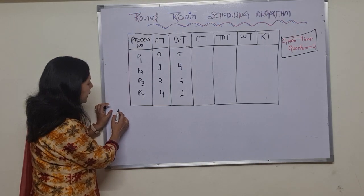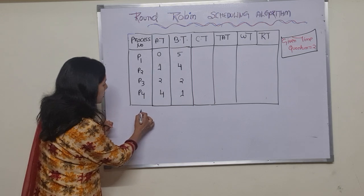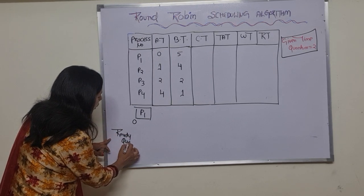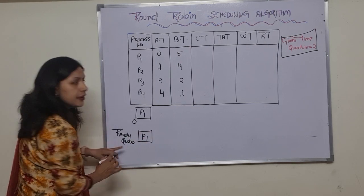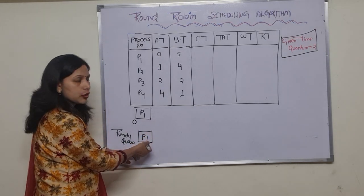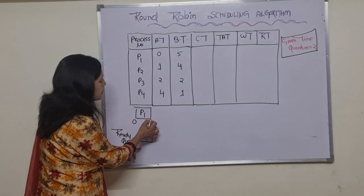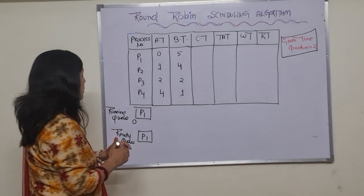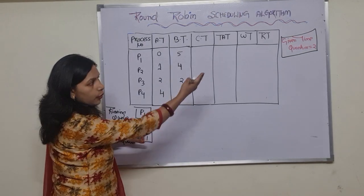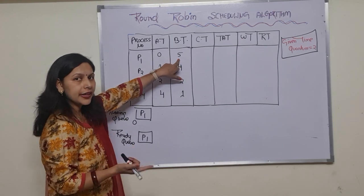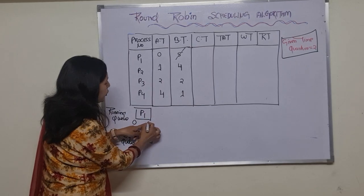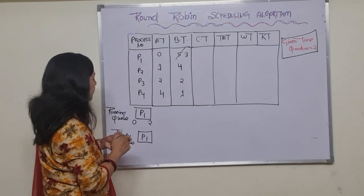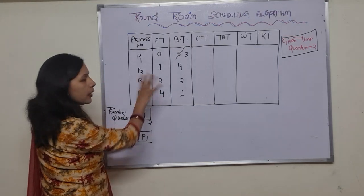First, process P1 has arrived first, so it enters the ready queue and CPU is allotted to P1 in the running queue. The burst time of P1 is 5, so two quantum of time are allotted, leaving a remaining time of 3. Between time 0 to 2, processes P2 and P3 have also arrived, so we add P2 and P3 to the ready queue.